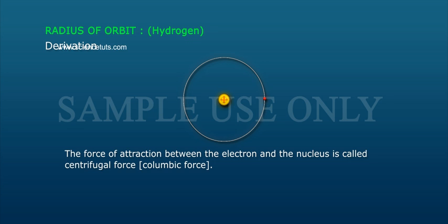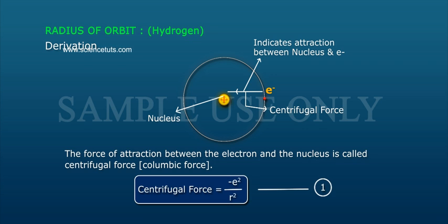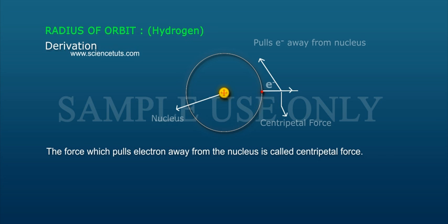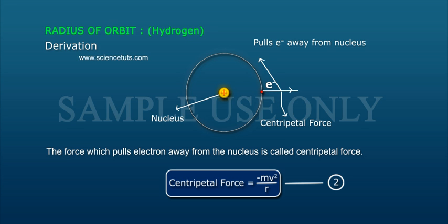The force of attraction between the electron and the nucleus is the Coulombic force. Coulombic force is equal to minus e squared by r squared — equation one. The force pulling the electron away from the nucleus is the centripetal force, equal to minus mv squared by r squared — equation two.